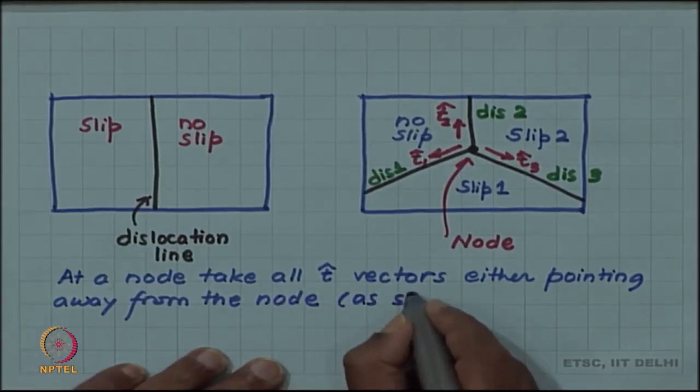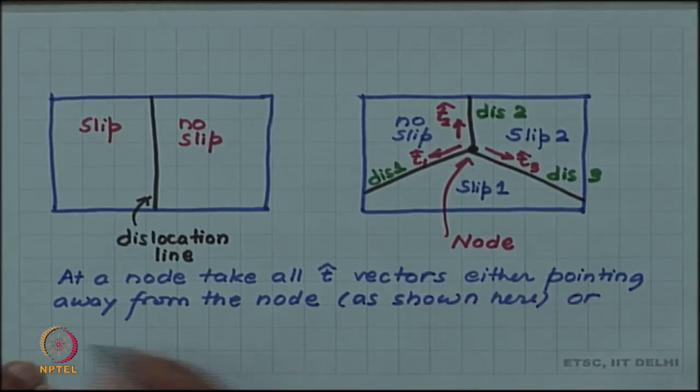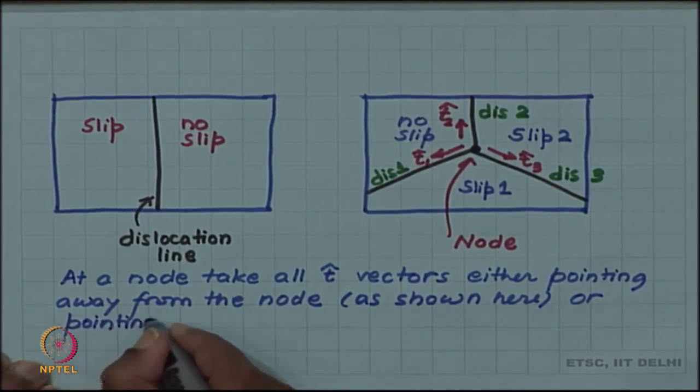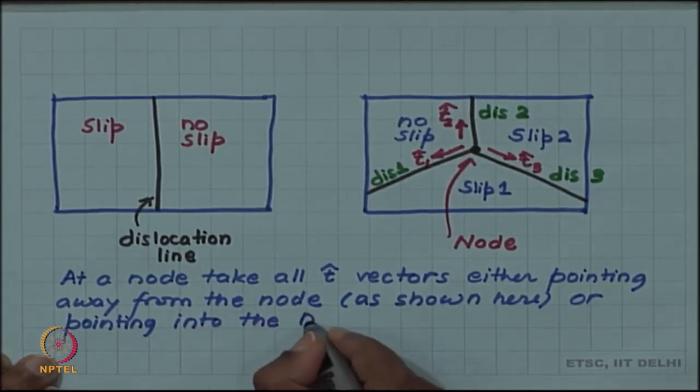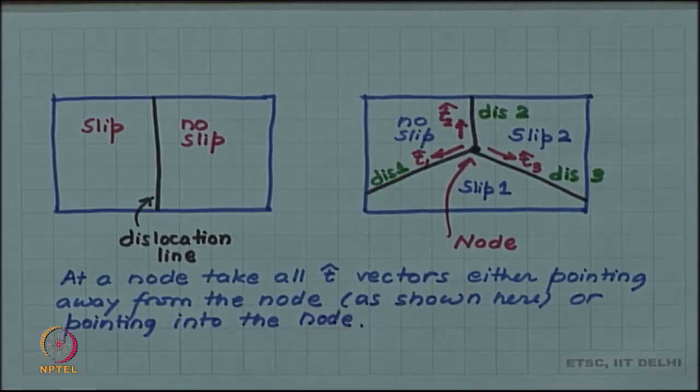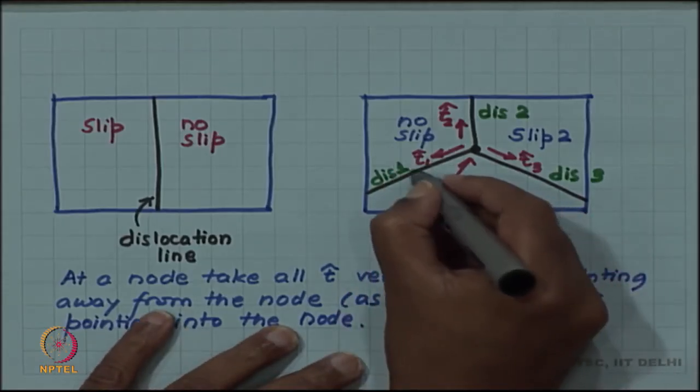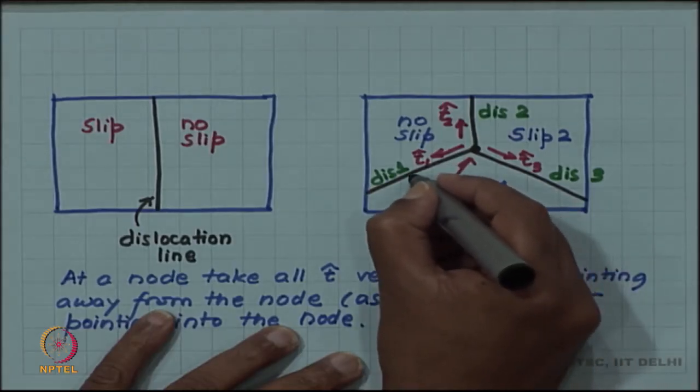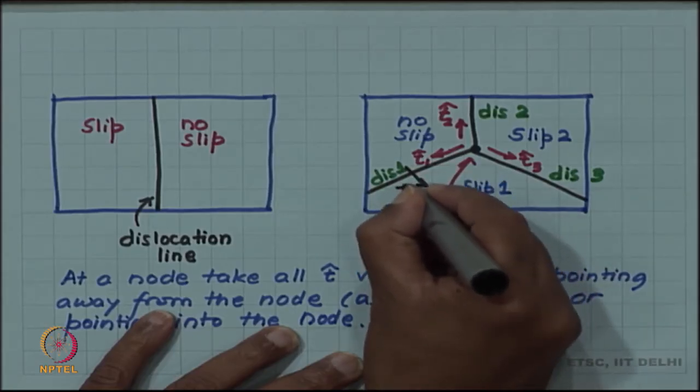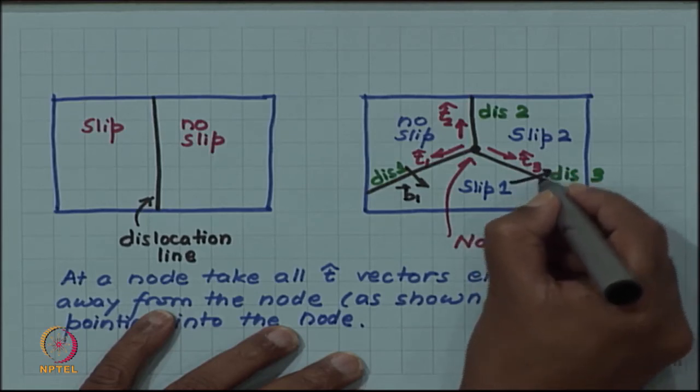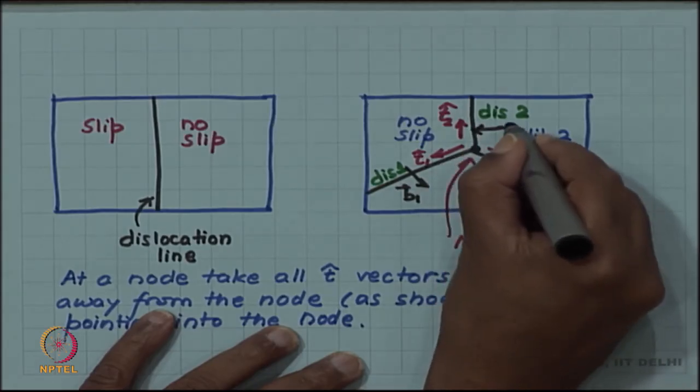As shown here or pointing into the node, and based on these t vectors you determine their Burgess vector. Each of them will then have some Burgess vector associated with the dislocation line. Let me call this Burgess vector B1, this Burgess vector B3 and this Burgess vector B2.